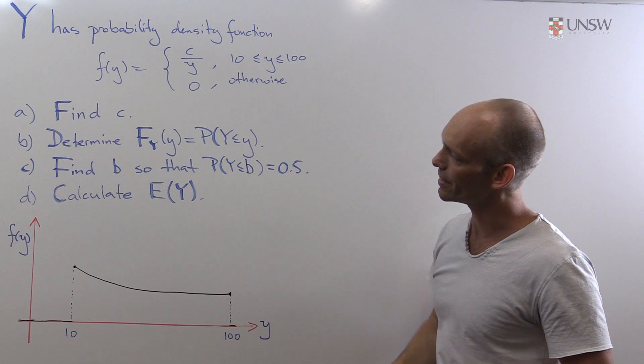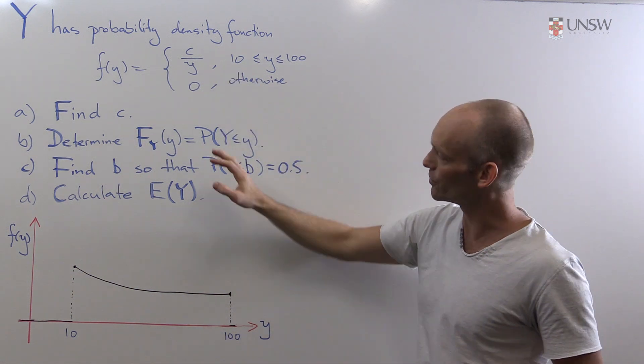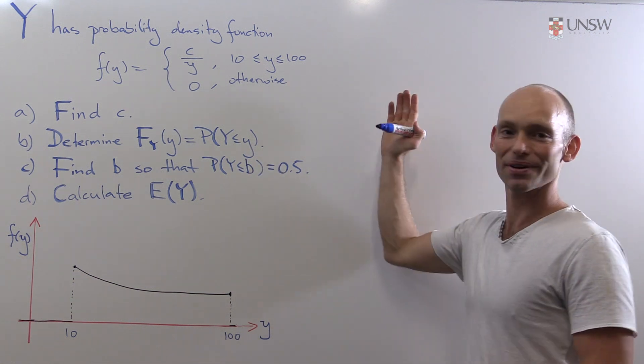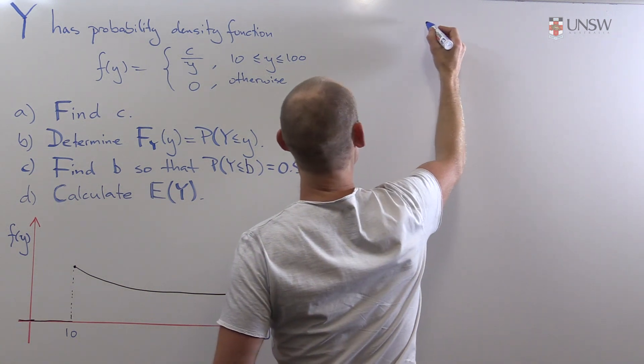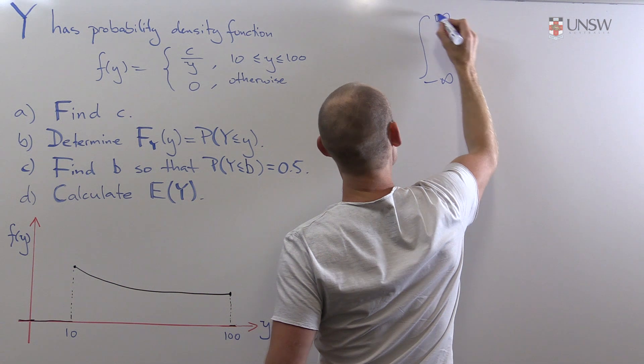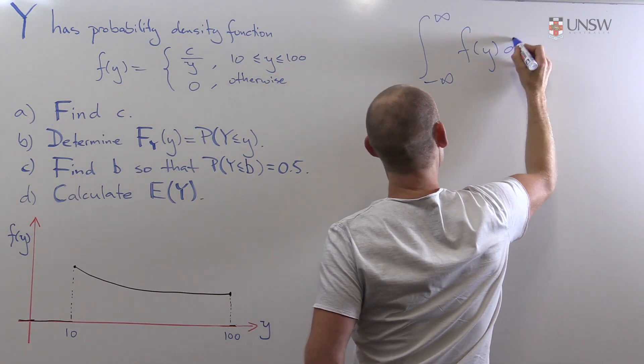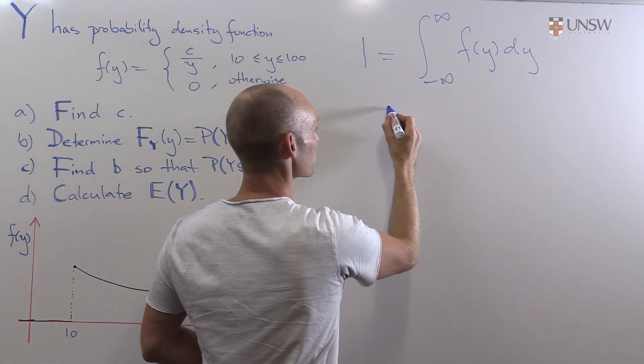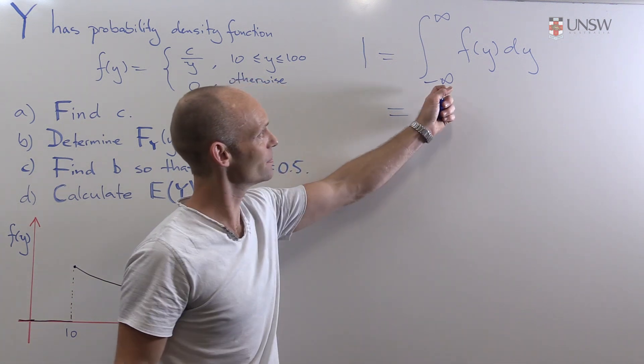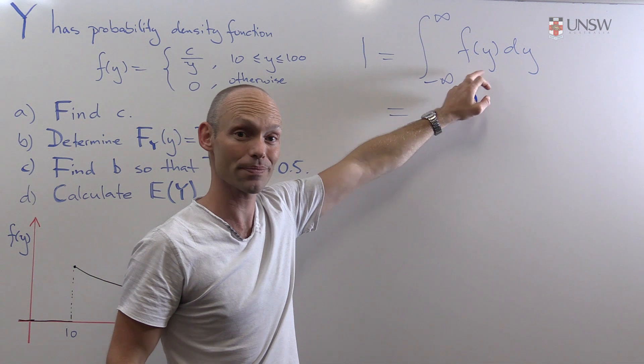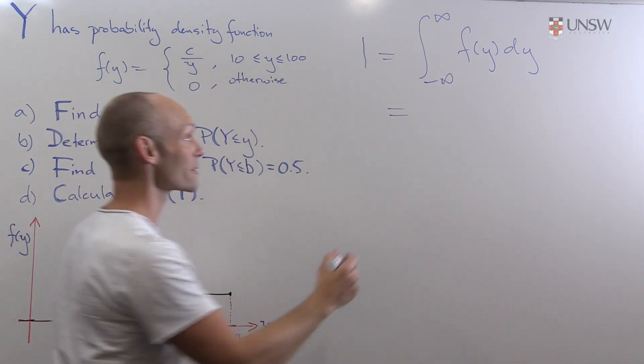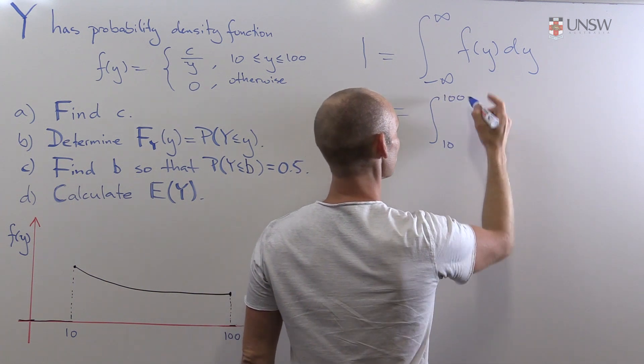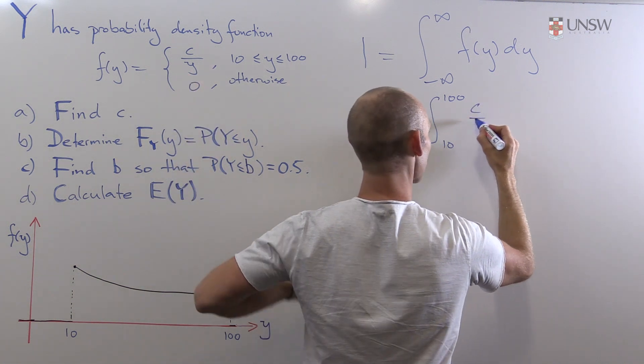We've got four things to calculate. First, we have to find that constant, and then we have to do other things. So let's first figure out what that constant is. So let's find c. We have that the integral from minus infinity to infinity over this function is exactly equal to 1. Now the only place where we actually have that this function is not zero is within this interval from 10 to 100. So we just have the non-zero contributions from 10 to 100 here. And the function is equal to c over y within that interval.